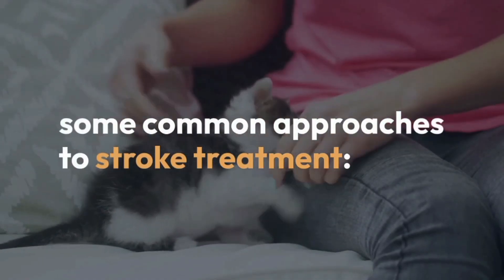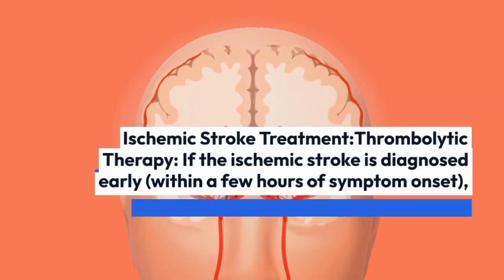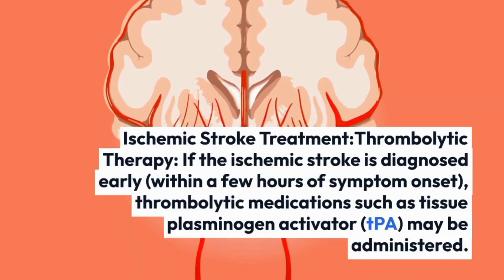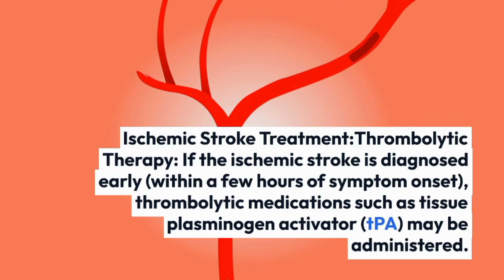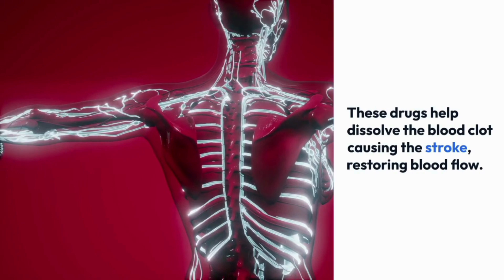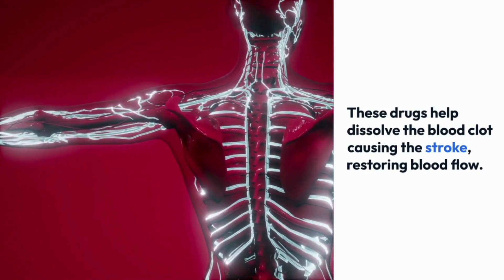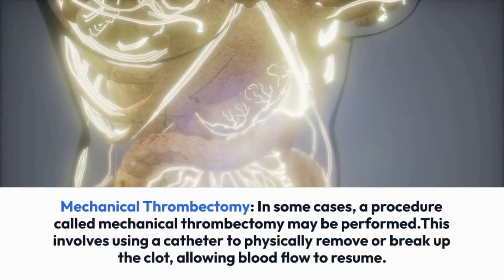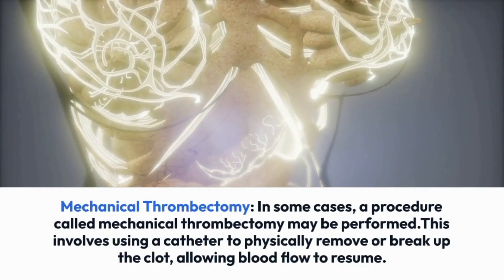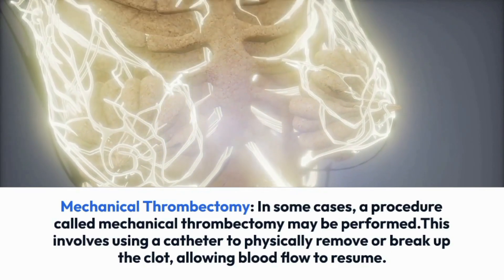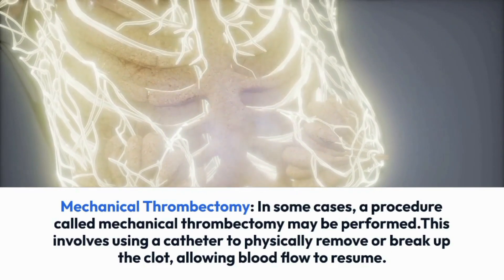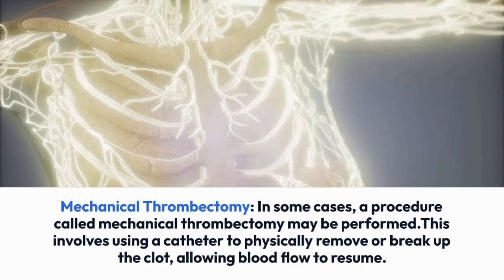Some common approaches to stroke treatment. For ischemic stroke: thrombolytic therapy — if the ischemic stroke is diagnosed early, within a few hours of symptom onset, thrombolytic medications such as tissue plasminogen activator, TPA, may be administered to help dissolve the blood clot causing the stroke, restoring blood flow. Mechanical thrombectomy may also be performed, using a catheter to physically remove or break up the clot, allowing blood flow to resume.